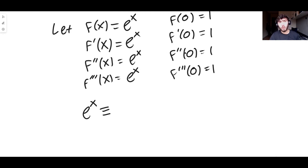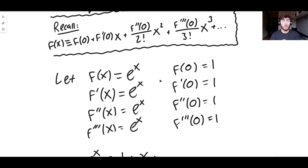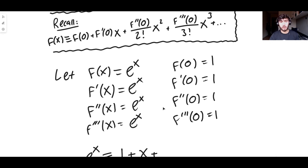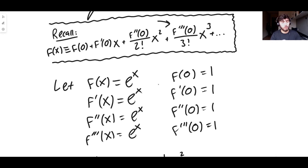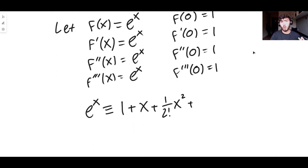So we substitute essentially one into the formula, and what we're left with is: e to the x equals f of zero, which is just one, plus f prime of zero times x, so one times x, which is x. Then the second derivative divided by two factorial times x squared — the second derivative evaluated at zero is one — so one divided by two factorial times x squared. Then the third derivative divided by three factorial times x cubed, and the third derivative evaluated at zero is one, so it's one divided by three factorial times x cubed.